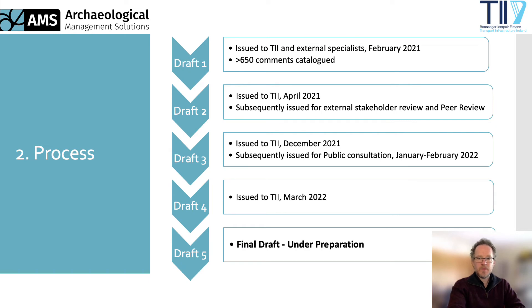From there, the process was to produce the two documents, which have gone through multiple rounds of review and revision by TII and AMS staff with input from external stakeholders and experts. Draft 1 of the guidance was issued to TII and the external specialists in February 2021 — a rough working draft that generated over 650 comments to help guide the second draft. Draft 2, issued in April 2021, went for review by external agencies as well as peer review. Draft 3 was issued for public consultation earlier this year, and Draft 4 was submitted to TII in mid-March. Draft 5 will be the final draft, currently in progress, but there is still a window of opportunity for practitioners to provide input.